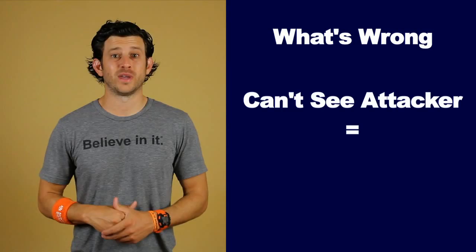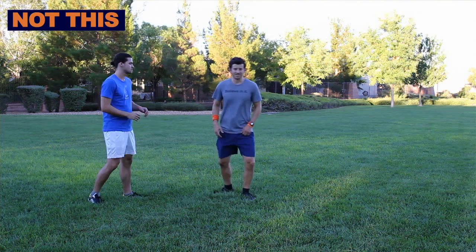Some things that could be going wrong: If you are constantly losing your attacker because you can't see them, then your back is to the attacker. Turn your body so you can see the ball and the attacker. It sounds easy, but it's not easy to make it look easy.